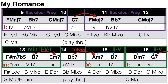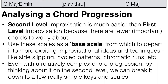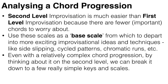Then finally in bar 16, we return to the C major scale. That's much easier than the first level improvisation because we're using far fewer scales. Of course, you would use these scales as a base from which to depart into more exciting improvisational ideas and techniques — like side-slipping, cycle patterns, chromatic runs, or whatever.